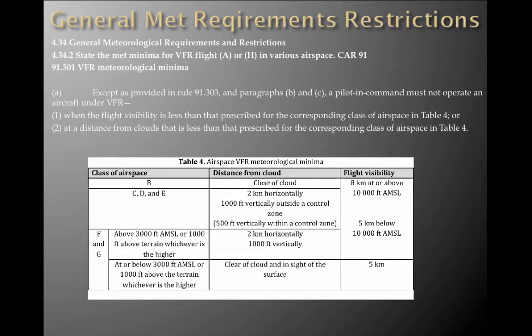The easy way to remember it: in Class B, you have to be clear of cloud, and the flight visibility has to be 8K at or above 10,000 feet AMSL. In Class C, D, and E, you need 2K horizontal separation and 1,000 feet vertical outside of a control zone, and 500 feet vertically within a control zone. That's the same flight visibility — 8K at or above 10,000 feet AMSL and 5K below 10,000 feet AMSL.